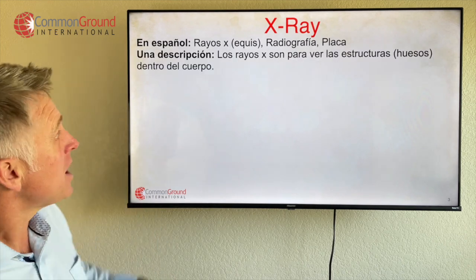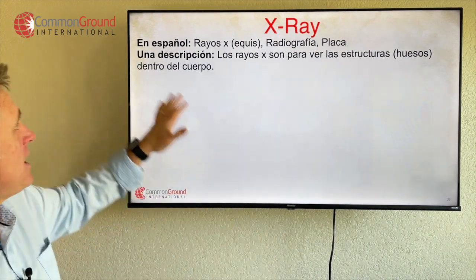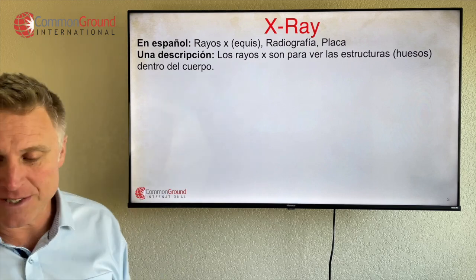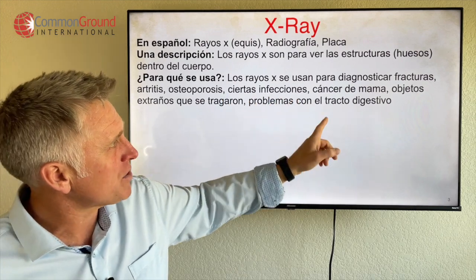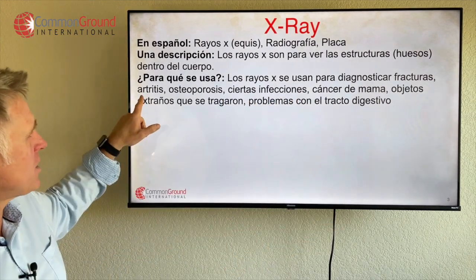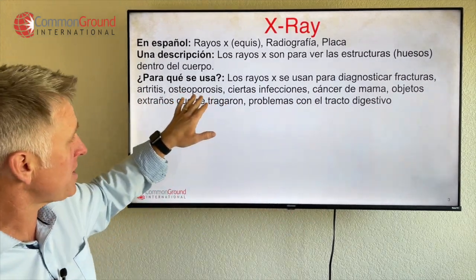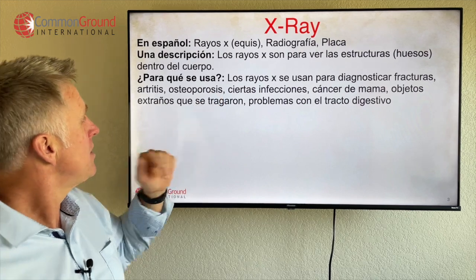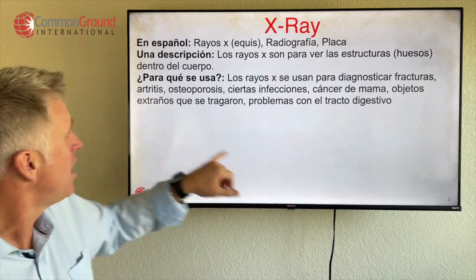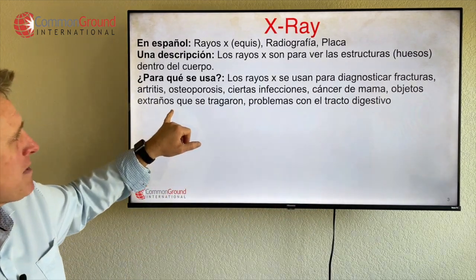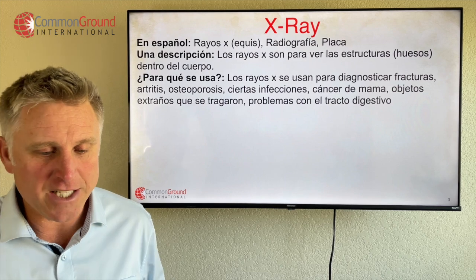Let's look at a description. Los rayos X son para ver las estructuras — structures — huesos, bones, dentro del cuerpo, inside the body. ¿Para qué se usa? Los rayos X se usan para diagnosticar fracturas, artritis — so to diagnose fractures, arthritis — osteoporosis, ciertas infecciones, certain infections, cáncer de mama, breast cancer, objetos extraños — foreign objects que se tragaron, that were swallowed — y problemas con el tracto digestivo, and problems with the digestive tract.